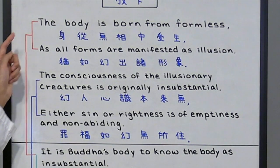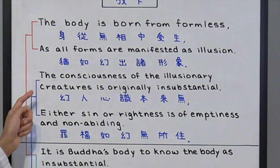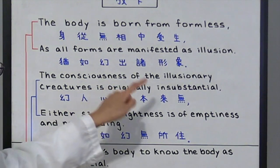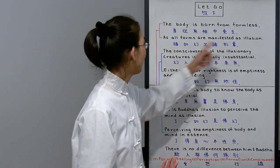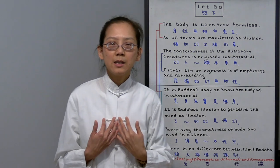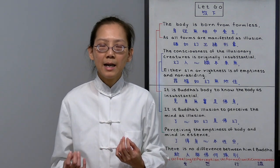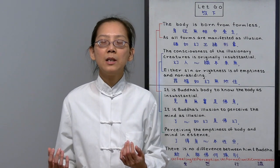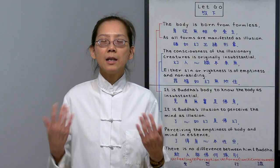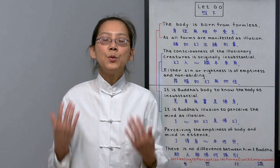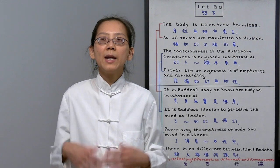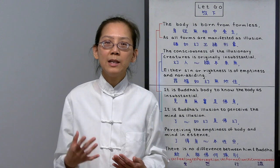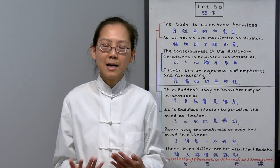So that was talking about the body. Now let's talk about the mind. The consciousness of the illusionary creatures is originally insubstantial. This illusionary creature is us because our mind is the deluded mind, the basic ignorance consciousness. So we are actually the dream mind. If we wake up, then we are the Buddha mind. So all we have to do is wake up from this dream state. And how do we wake up? We need to truly understand the essence of our body and mind.